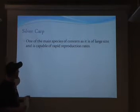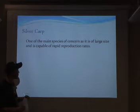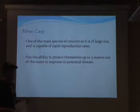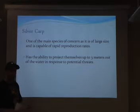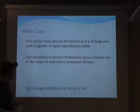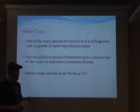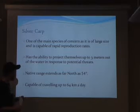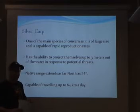One of the main species of concern is the silver carp. It is large-bodied and capable of rapid reproduction. It has the ability to project itself three meters out of the water in response to threats like boat vibrations. Its native range extends as far north as the 54th parallel, and it is capable of traveling up to 64 kilometers a day under ideal conditions.